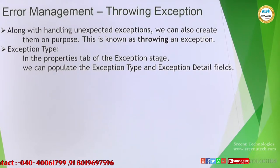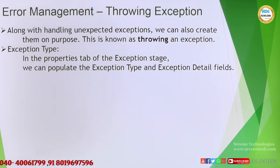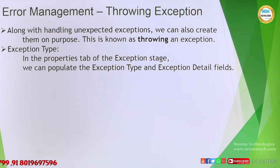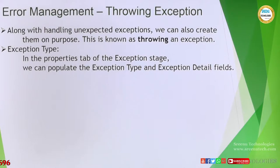For that we have to use something called an exception stage. In the recover and resume stage earlier we saw division by zero as the exception detail and exception type. Now here, since we are throwing the exception ourselves - the system is not throwing it - we have to explicitly say what is the type and what is the detail. Whatever we write as the type and the detail will be shown in the recovery and resume stage.